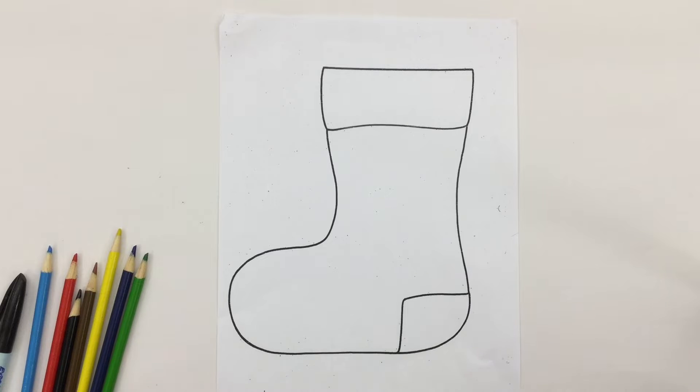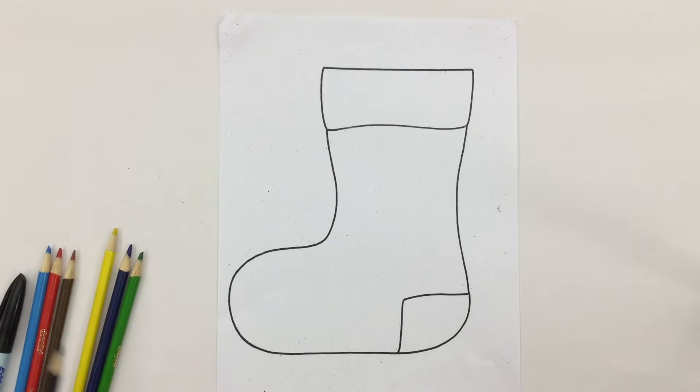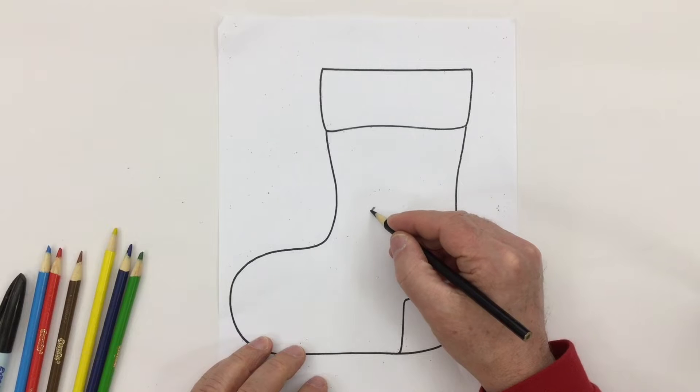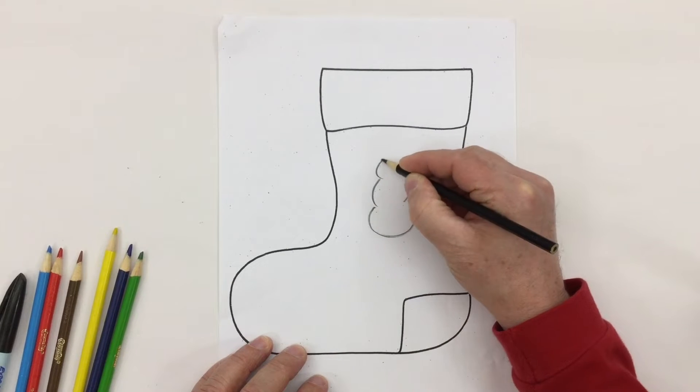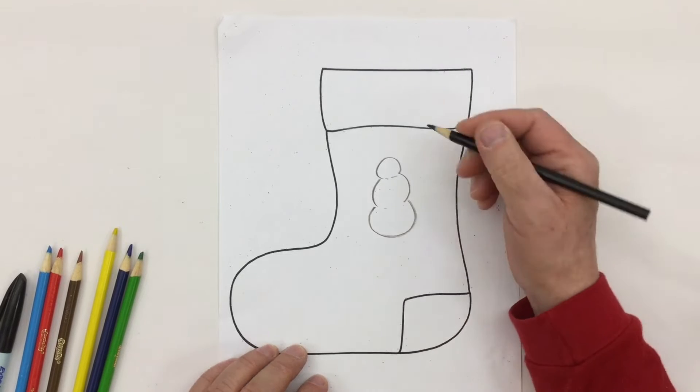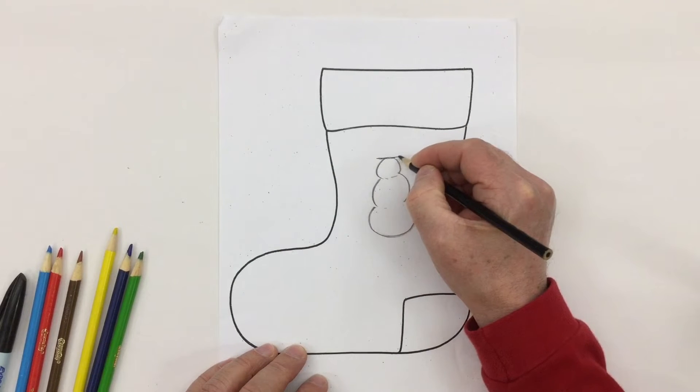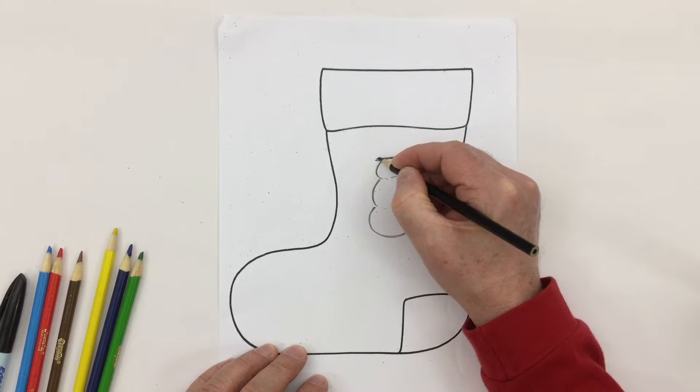Here we have our Christmas sock or Christmas stocking. It needs to be decorated, so what sort of colors and what sort of things could go on it that are Christmas or winter? Well, I think we could start with maybe a snowman. We'll give our snowman a nice top hat.